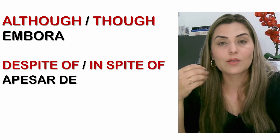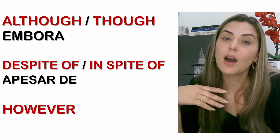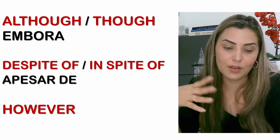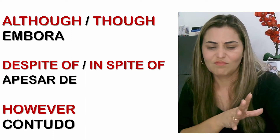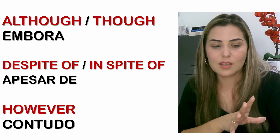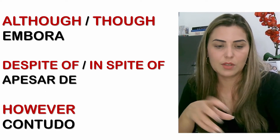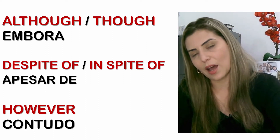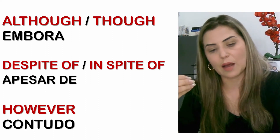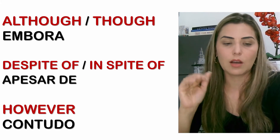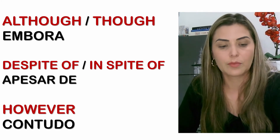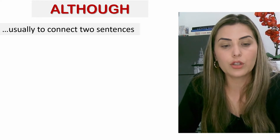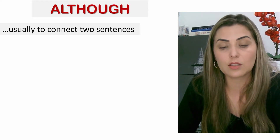Em português: 'although' seria nosso 'embora,' 'in spite of' seria 'apesar de,' e 'however' seria 'contudo.' Nessa fase é importante memorizar dessa maneira para te ajudar a utilizar lá na frente. Although, in spite of, however — ok!